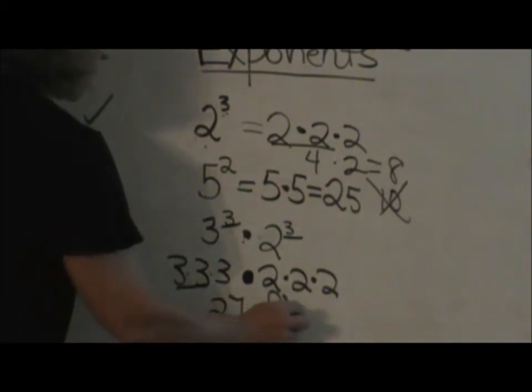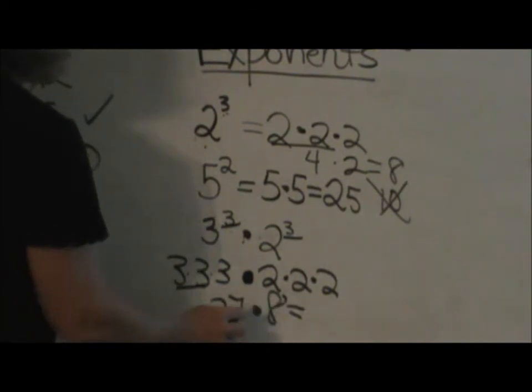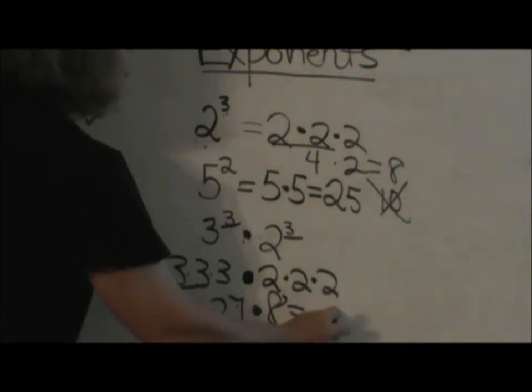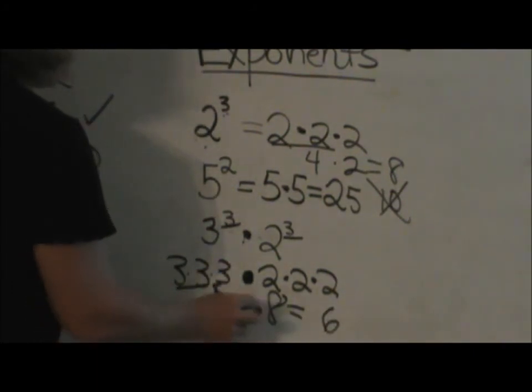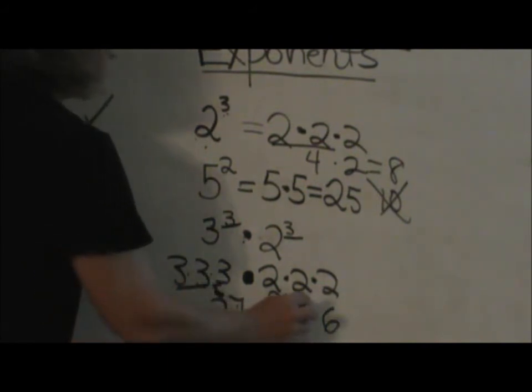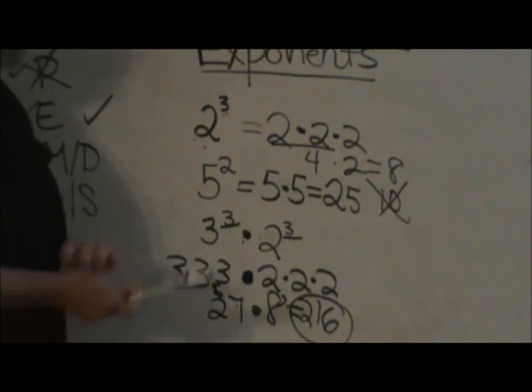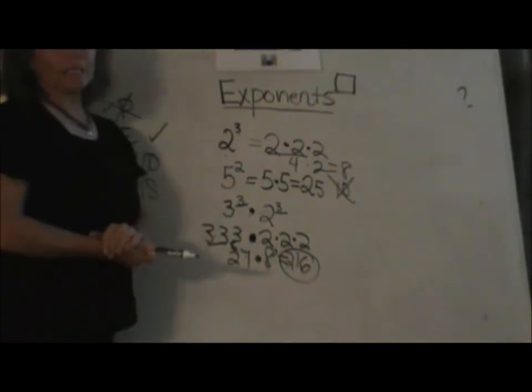So 27 times 8 is 216. So that would be my final answer. I hope this quick lesson on exponents has helped.